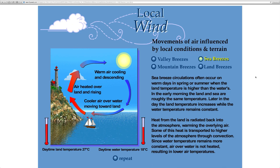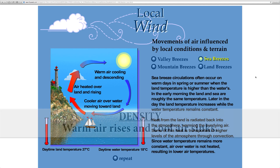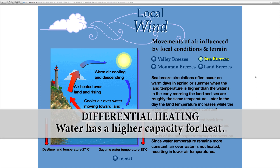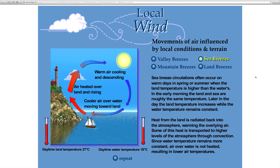This lesson is going to cover the concept of how wind moves. The four primary types we're going to refer to are sea, land, valley, and mountain. Prior knowledge would include the concepts of density and differential heating. We've learned that warm air rises and cool air sinks, and that water has a higher capacity for heat — it takes more energy to change the temperature of water than it does other materials like sand, soil, or air. We're primarily going to be discussing how air temperature changes over water and over land.